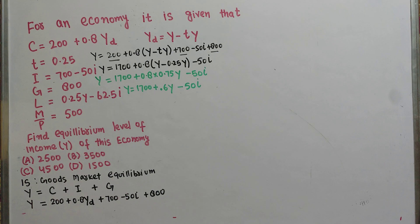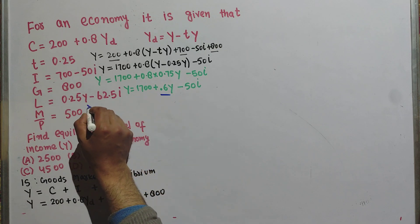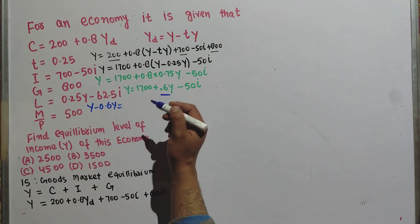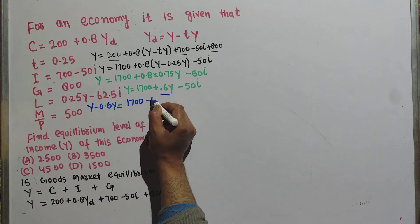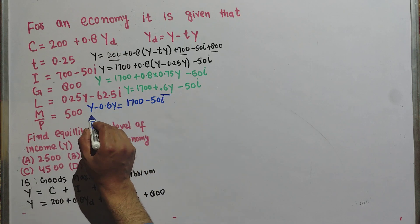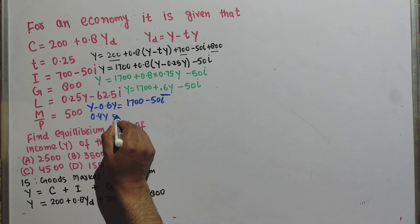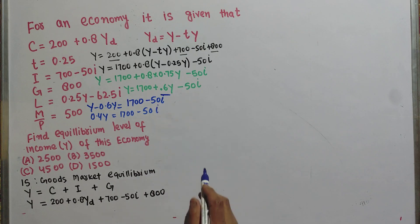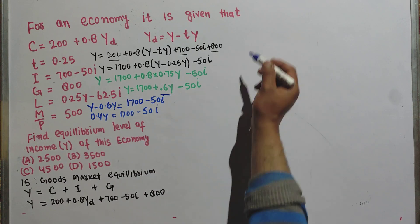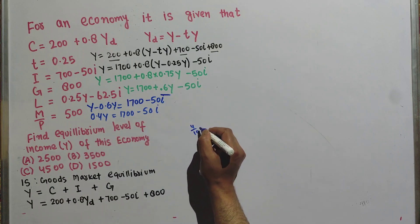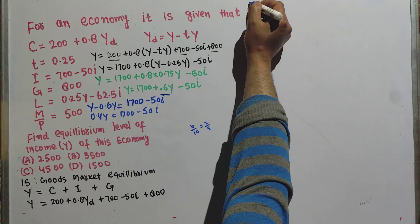Moving 0.6Y to the left-hand side: Y − 0.6Y = 1700 − 50i, which gives 0.4Y = 1700 − 50i. Since 0.4 = 2/5, we can write (2/5)Y = 1700 − 50i.